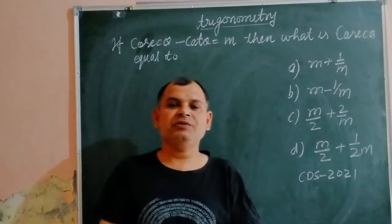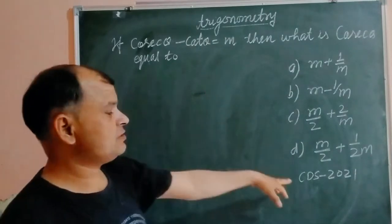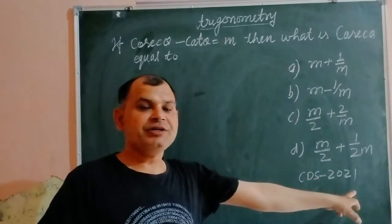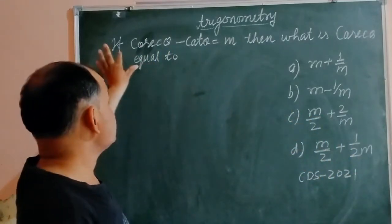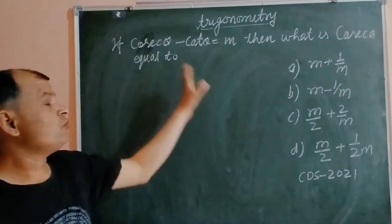Hello students, this is the question which is asked in CDS 2021. The question is: if cosec theta minus cot theta equal to m, then what is cosec equal to?